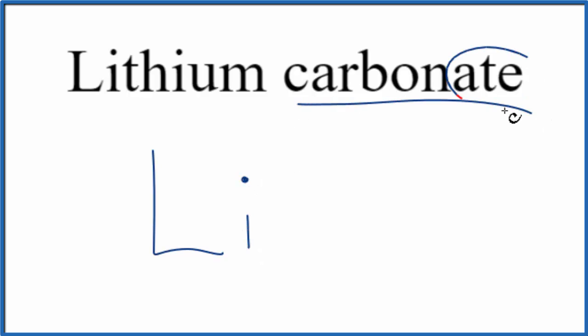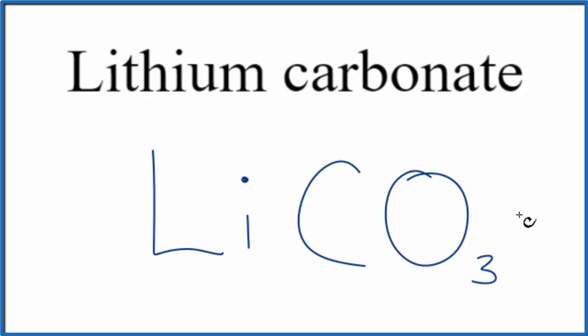For the carbonate, you see this ATE on the end here. That tells you it's not going to be on the periodic table. It's a polyatomic ion. So either you memorize that the carbonate ion is CO3 and it has an ionic charge of 2 minus on the whole thing, or if you're allowed, you look it up on a table of polyatomic ions.